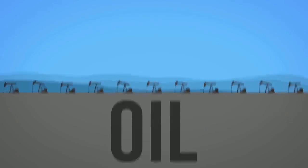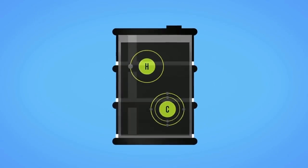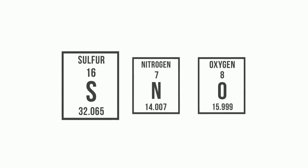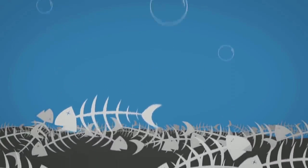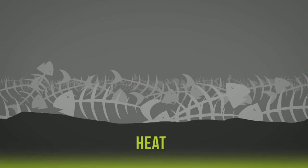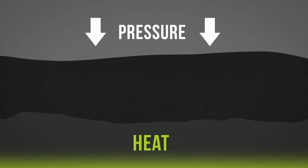Oil, otherwise known as petroleum or crude, is a thick black liquid composed primarily of hydrogen and carbon. Its physical properties vary greatly depending on the specific combination of hydrocarbon molecules. Oil also contains trace elements of sulfur, nitrogen, and oxygen. Today's oil deposits were formed millions of years ago when dead marine organisms sunk to the bottom of the ocean bed and were buried under deposits of sedimentary rock. After subjection to intense heat and pressure, they were converted to oil over millions of years.